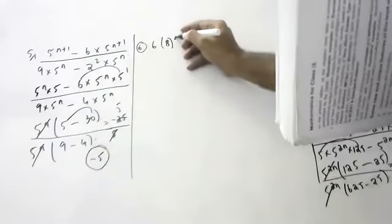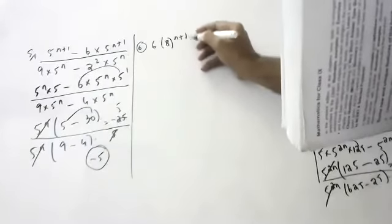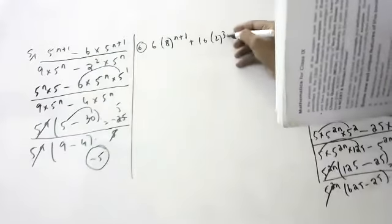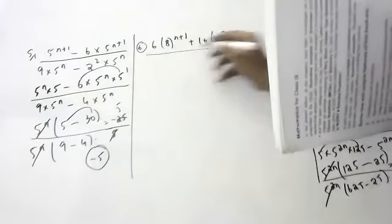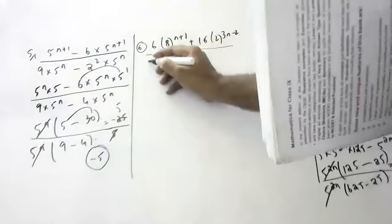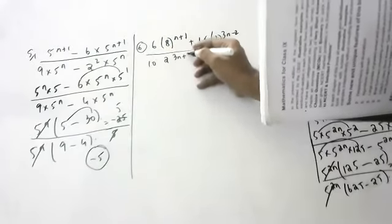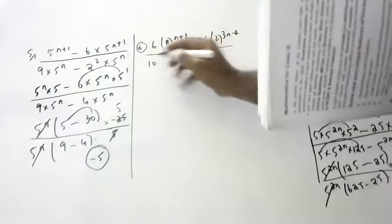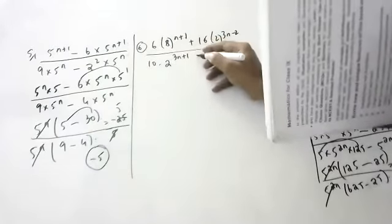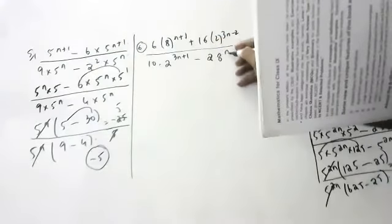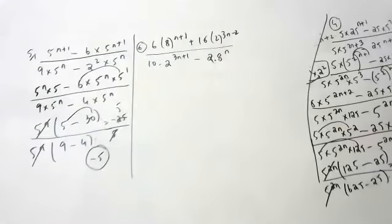Next question: 16 into 8 to the power n plus 1, plus 16 into 2 to the power 3n minus 2, divided by 10 into 2 to the power 3n plus 1, minus 2 into 8 to the power n. Any other student — any other student wants to try?